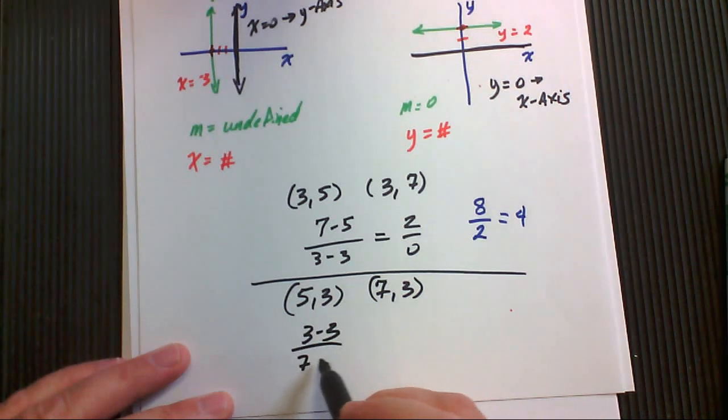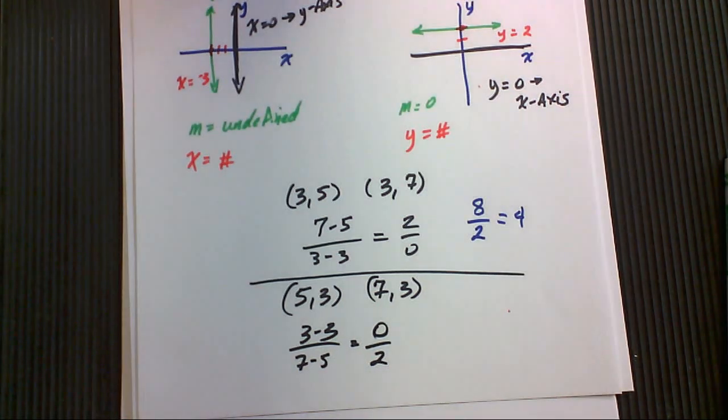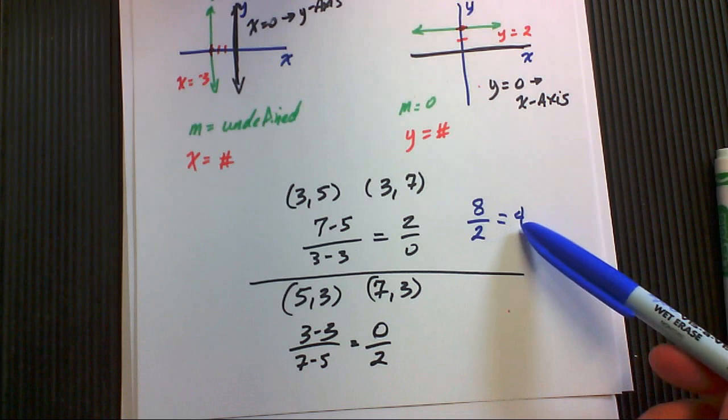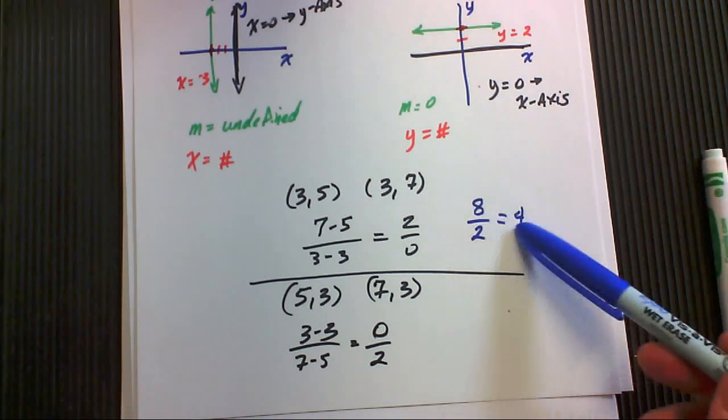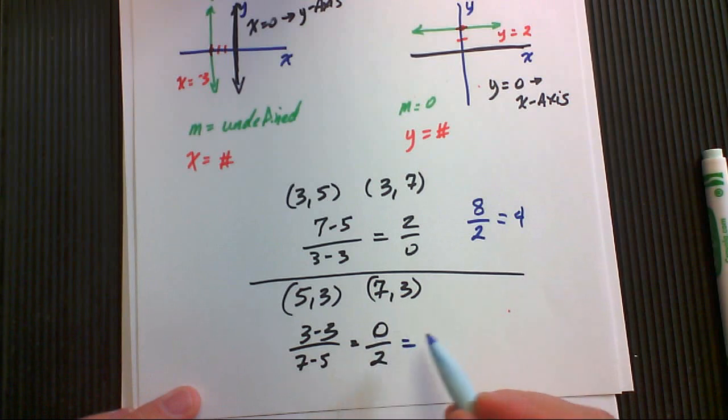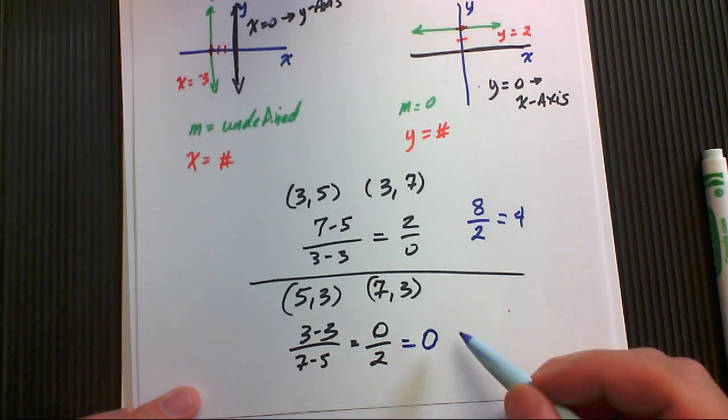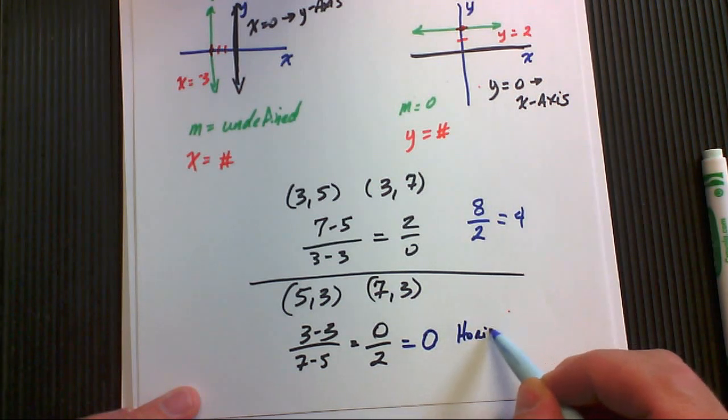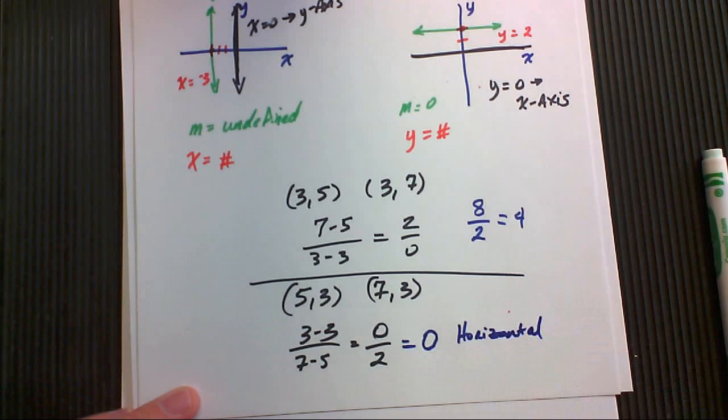So it's going to be y equals three would be the equation that this line is. Using our formula, three minus three, seven minus five, zero over two. What this really means, just like here, this was saying two times what equals eight. Two times four is eight. This is saying two times what number equals zero? Zero. So this right here has a slope of zero, and it is horizontal.